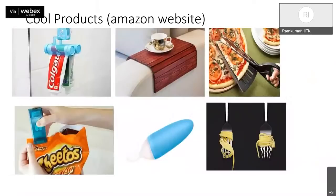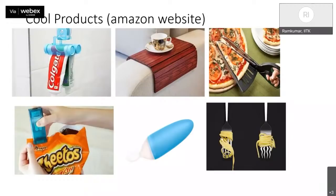When we squeeze toothpaste, we always squeeze from the bottom. Why not attach it to a fixture that you roll, and at the bottom keep your brush so the paste drops directly? Many of us sit in a sofa with coffee in hand and the side table is far away. Why not make a small wooden arm rest mat to keep the coffee cup close? Here is a pizza cutter combining a scissor with a knife roller so you can cut the pizza and lift it simultaneously.